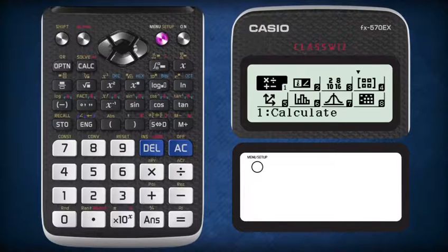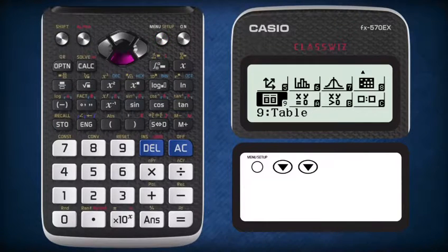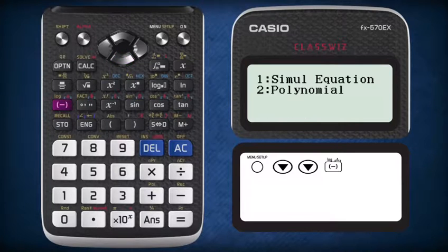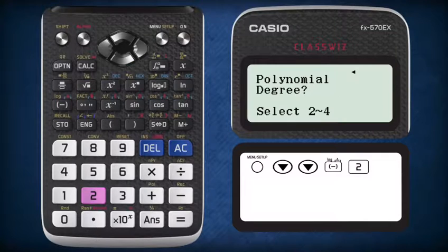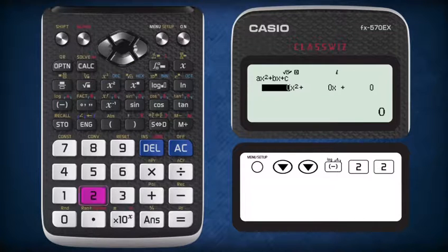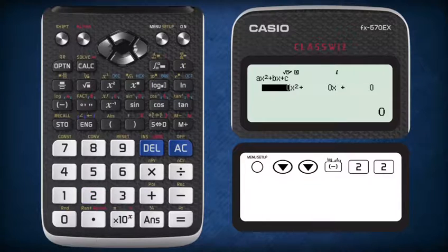First, press menu, and then scroll down twice, press the negative sign button to select option A, press 2 to select solving polynomial equation, and then press 2 again to select solving quadratic equation.